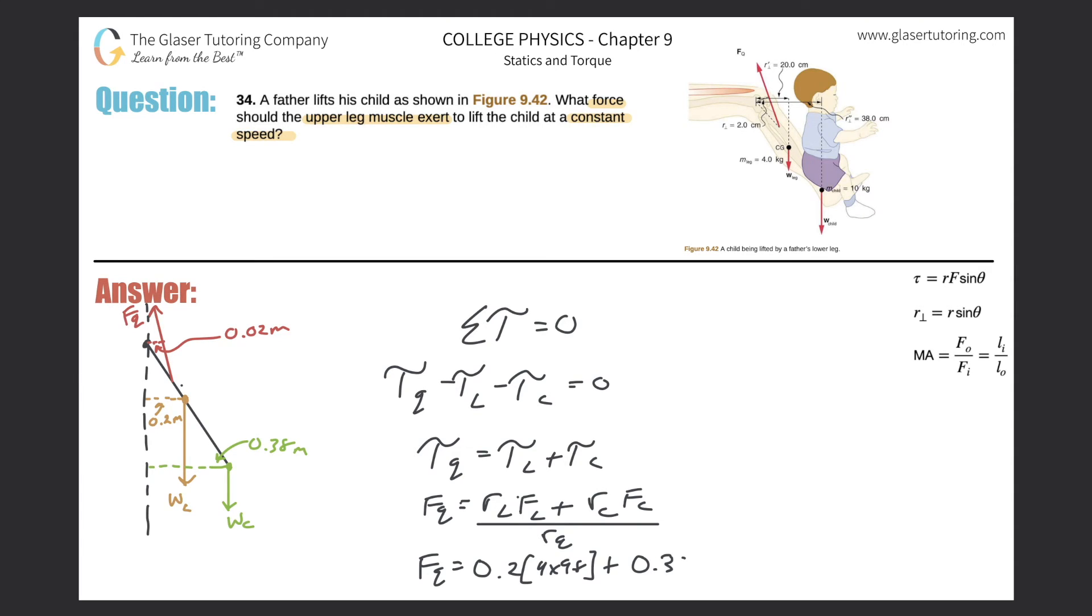0.38 multiplied then by the mass, 10 times 9.8, that's the weight. Now all divided by 0.02. Easy peasy, let's just plug it all into the calculator. So here 0.2 times 4 times 9.8 plus 0.38 times 10 times 9.8, all divided by 0.02, and we get a value of about 2254.